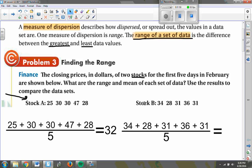Then I have stock B over here where my daily values are 34, 28, 31, 36, and another 31. If I add all of those up and divide that by five, funny enough, I actually get $32 again.